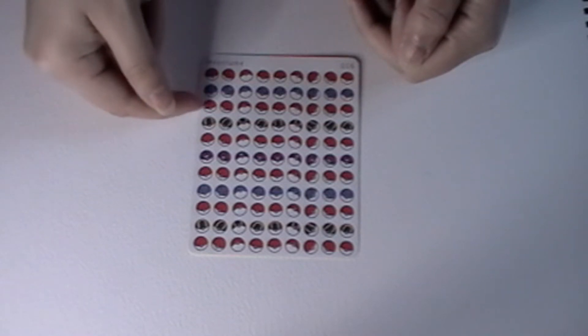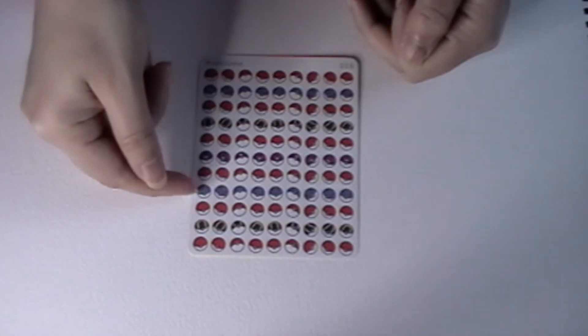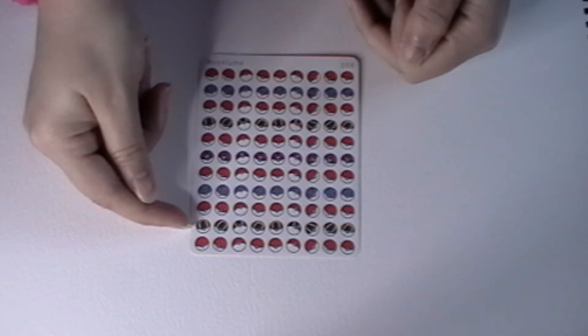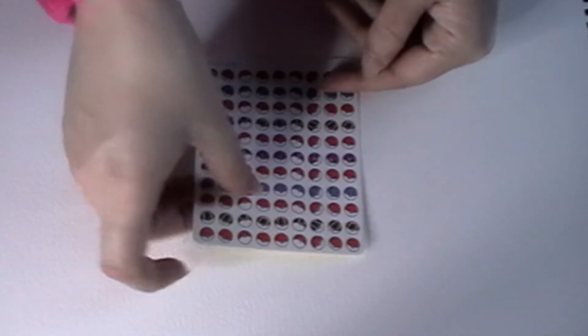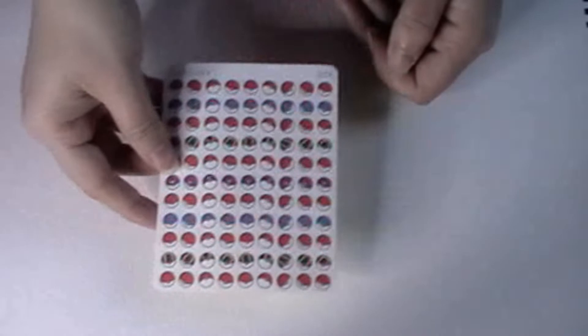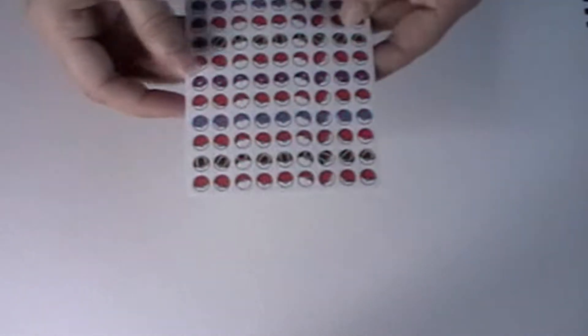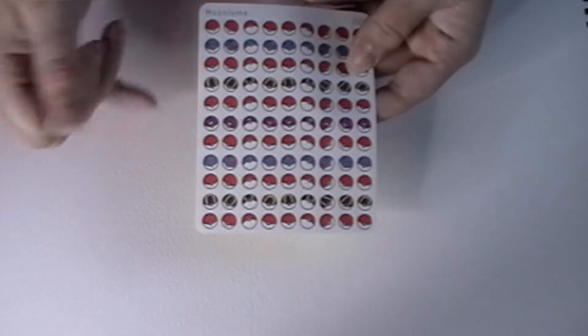So you get one, two, three, four, five, six, seven, eight, nine, ten. You get ninety-nine on this one sheet. That's pretty damn awesome. And I just like the fact that I can use a different Pokeball each day. Again, like I said, I'll put prices on the screen.